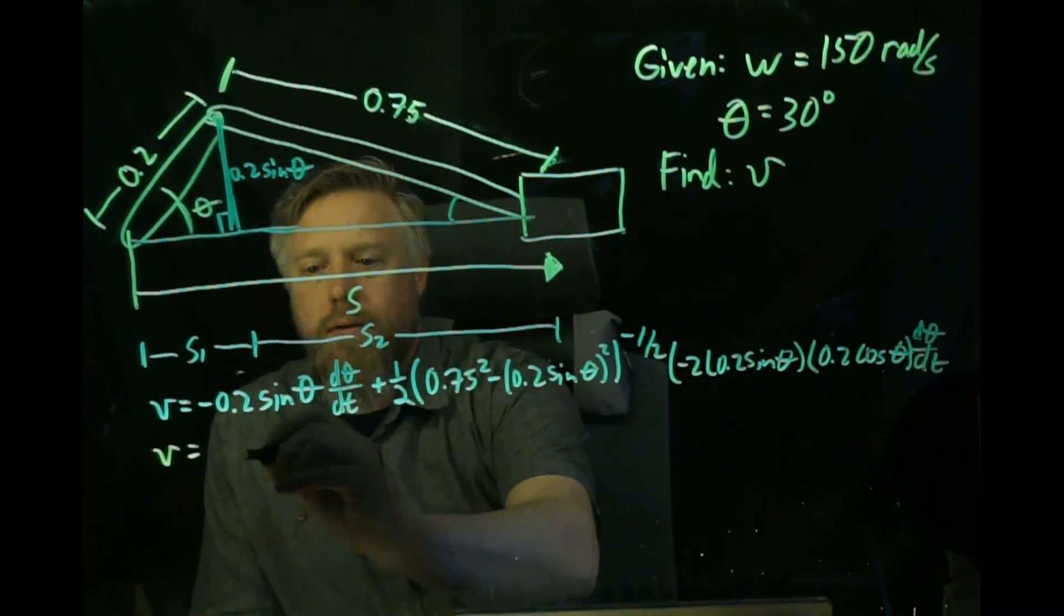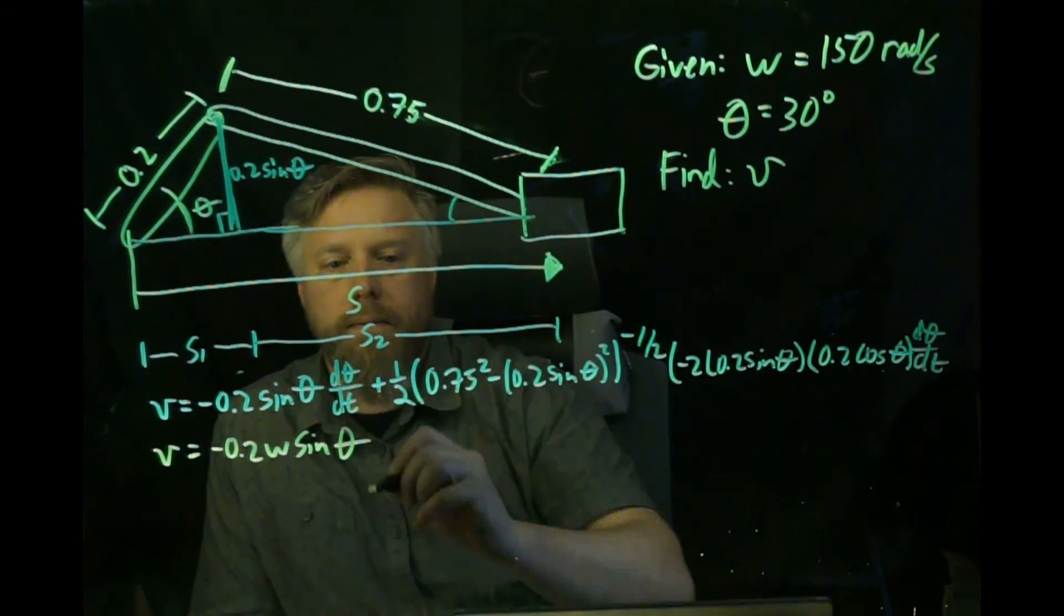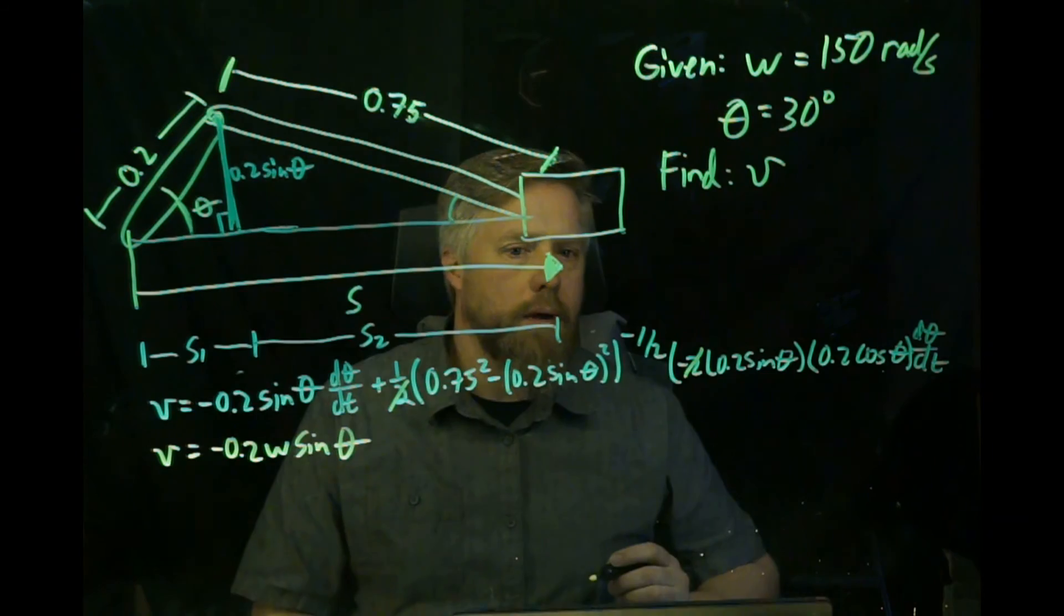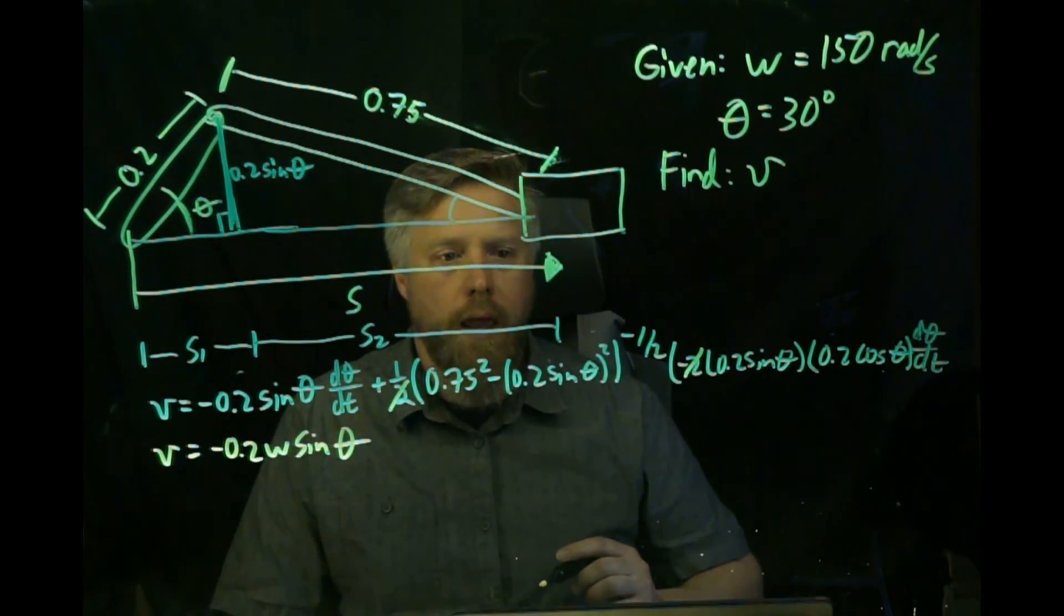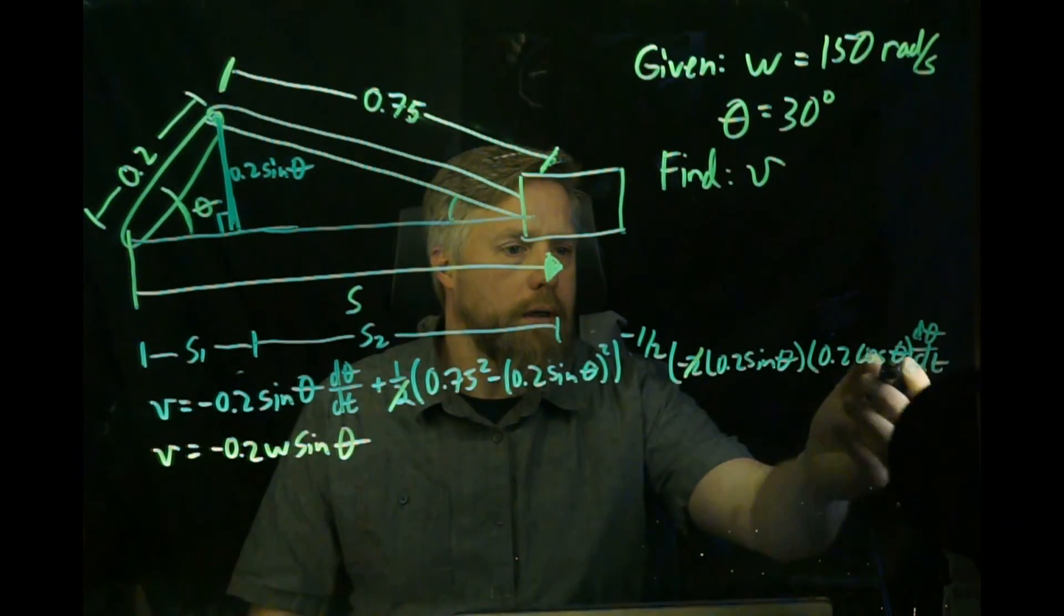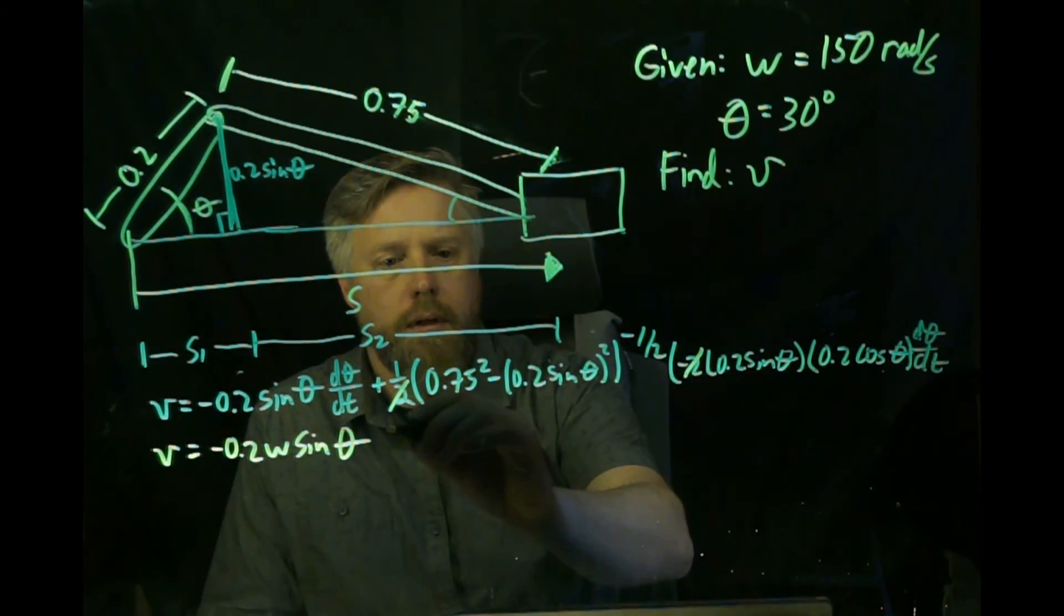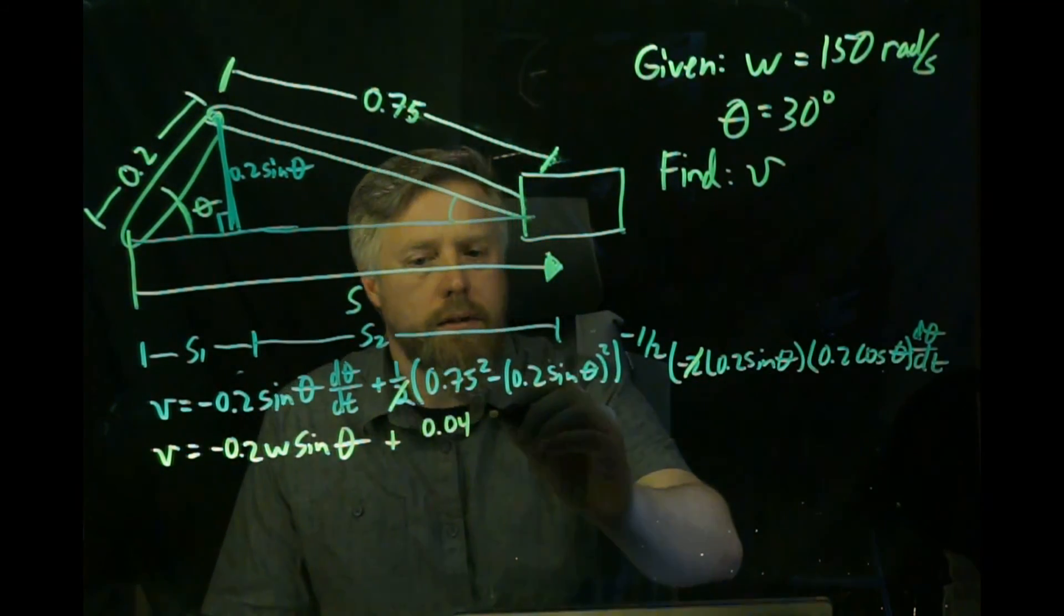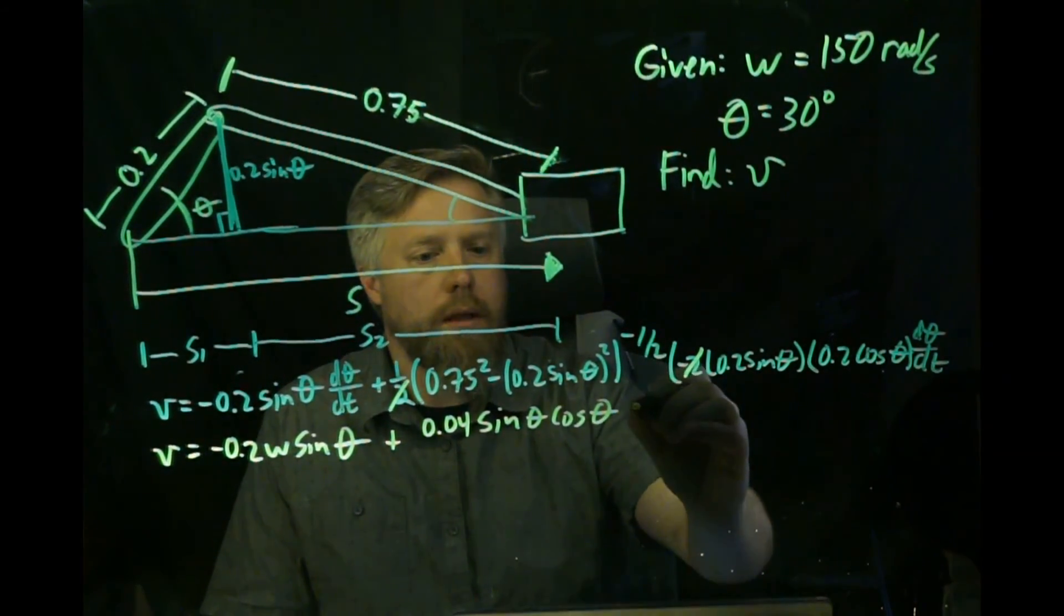So v equals negative 0.2 omega sine theta. This one, we have a 2 on the bottom, a 2 on the top—those cancel out. If we look at our negatives, it looks like we have two negatives so that will end up being positive. On the top, we have this term over here, which has two 0.2's, so it's 0.04. We have 0.04 and a sine theta, cosine theta, and omega.